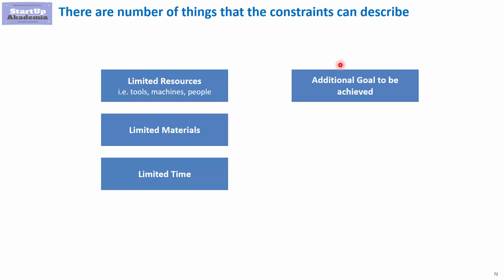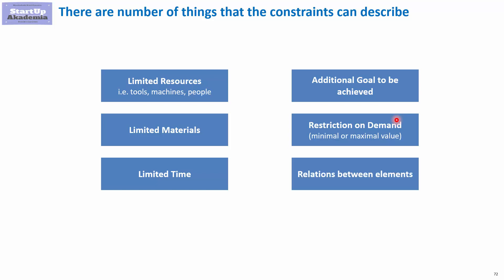The fifth thing you can use constraints to describe is the restriction on demand—we can define the minimal or maximum value on demand. And finally, I can also describe the relation between elements, between variables. For example, I can define that the production of a certain good should be bigger or smaller by a certain amount from the production of another good.